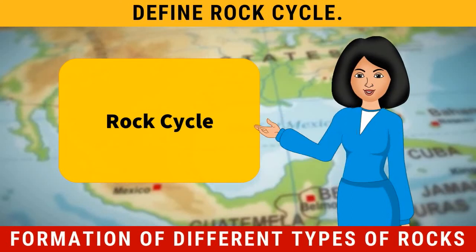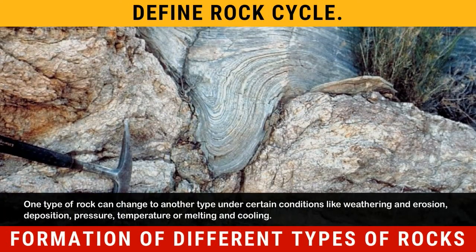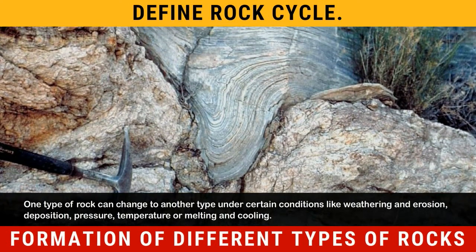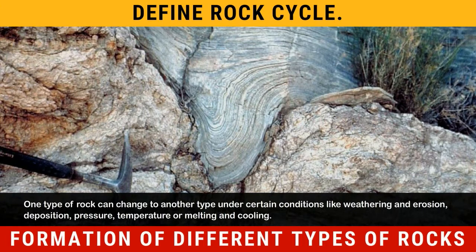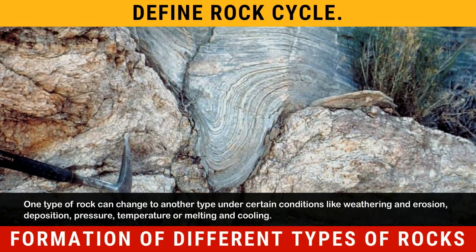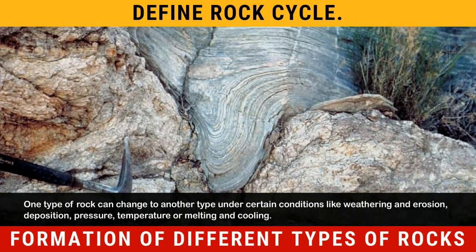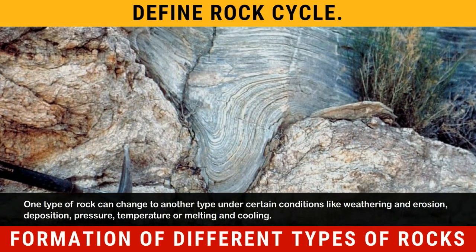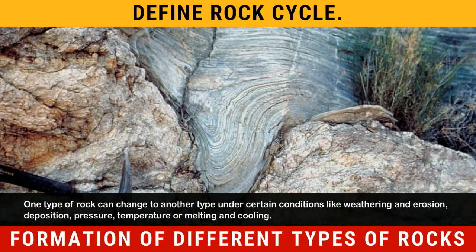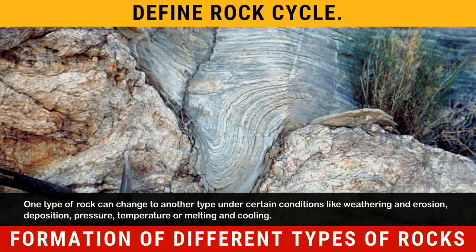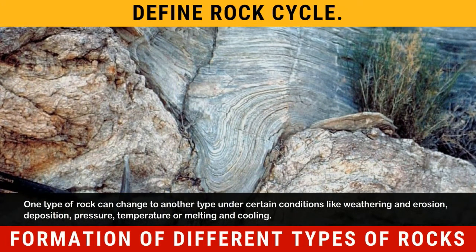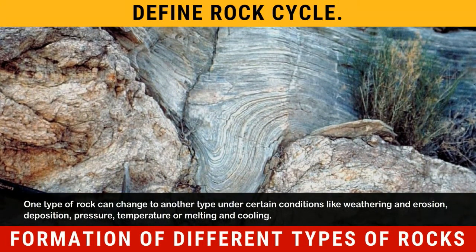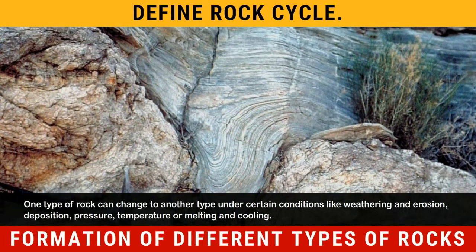Rock cycle. One type of rock can change to another type under certain conditions like weathering and erosion, deposition, pressure, temperature, or melting and cooling.